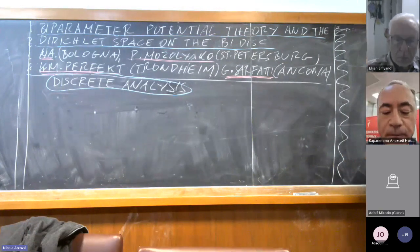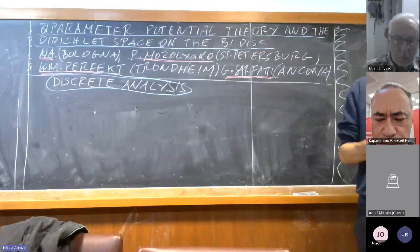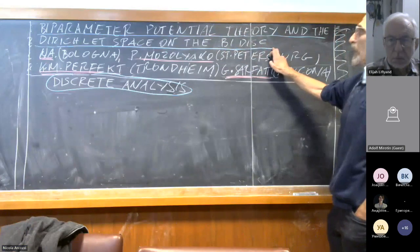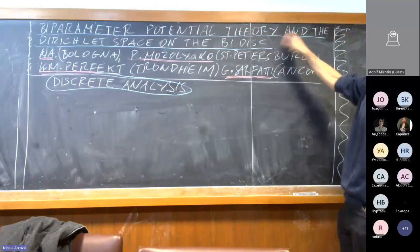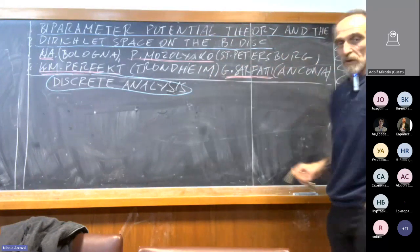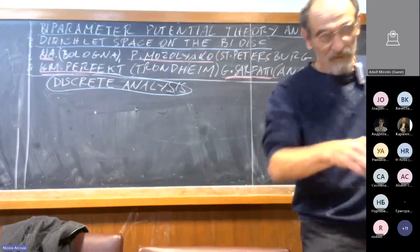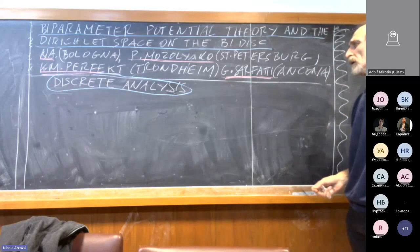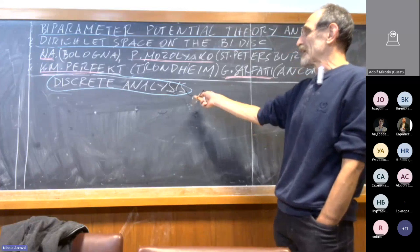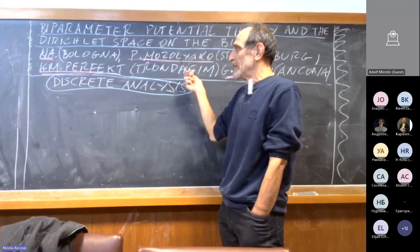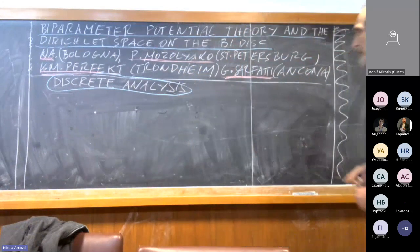Thanks a lot for the invitation. I plan to be an attendee of your seminar in the future. This talk is about the Dirichlet space on the bidisc and some notions of bi-parameter potential theory. It's a work in collaboration with Pavel Mozolyako from St. Petersburg State University, Karl-Mikael Perfekt from Trondheim, and Giulia Sarfatti, who is in Ancona. The work is going to appear soon in Discrete Analysis. From the name of the journal, you can guess that the holomorphic aspect will disappear very soon, and there is some discrete analysis involved in this picture.